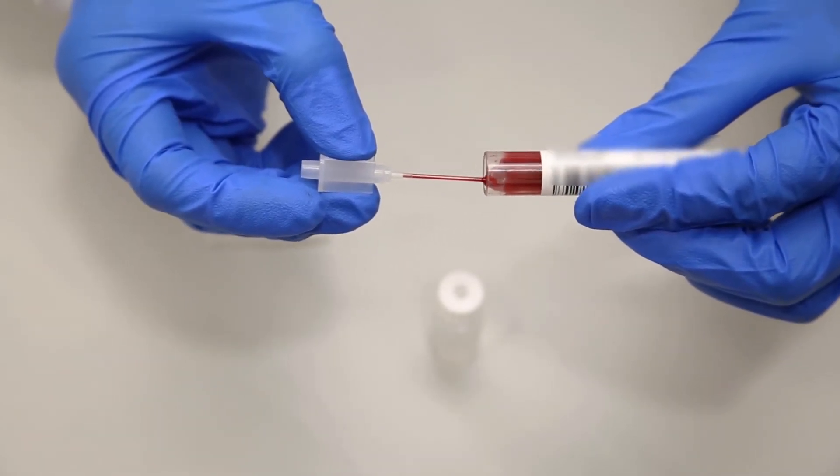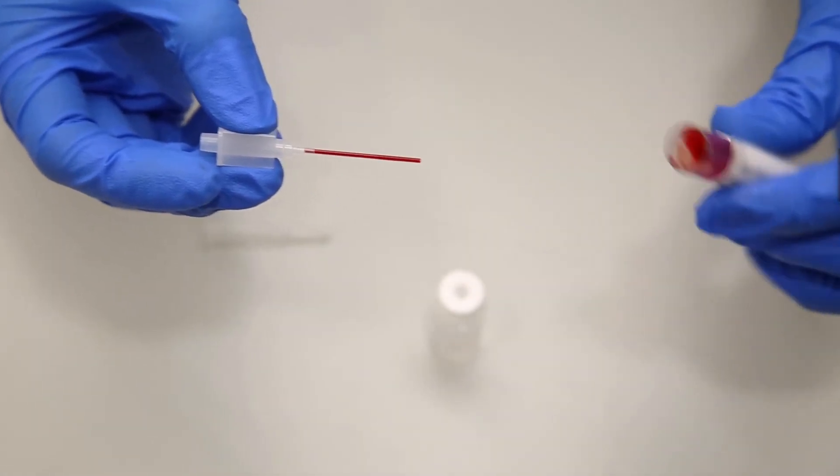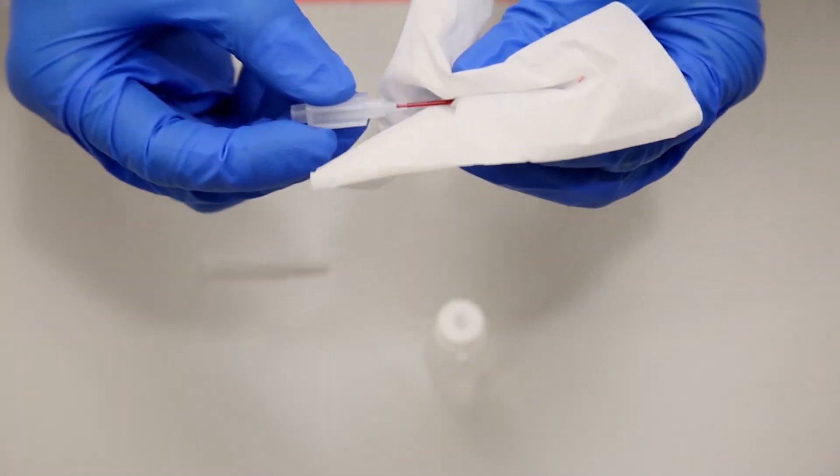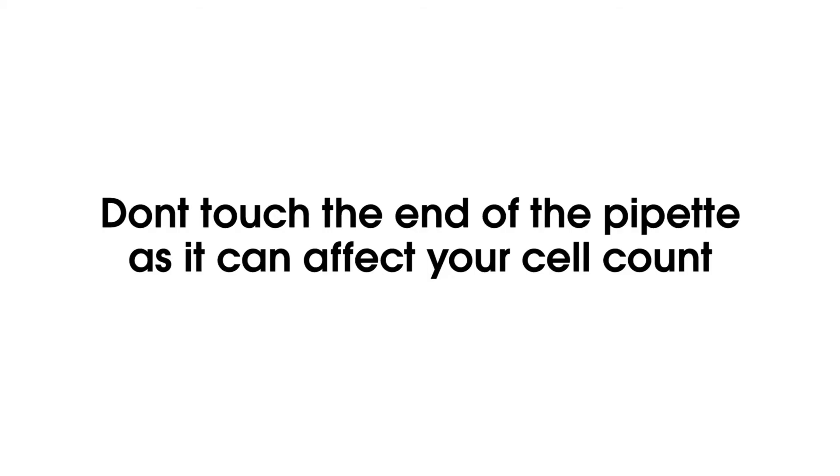When the blood reaches the neck of the pipet, no more blood will enter. Carefully wipe excess blood from the outside of the pipet using a lint-free tissue. Be careful not to touch the end of the pipet as the tissue may draw some sample from the pipet and negatively impact your dilution and cell count.